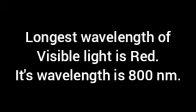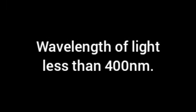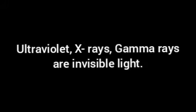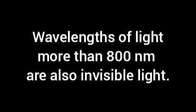If you see light with a wavelength less than 400 nanometers, those are lights we cannot see — ultraviolet, X-rays, and gamma rays. These are invisible light with wavelengths less than 400 nanometers. Whereas if the wavelength of light becomes more than 800 nanometers, those lights also we cannot see — infrared, microwave, and radio waves are invisible light with wavelengths more than 800 nanometers.